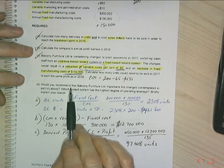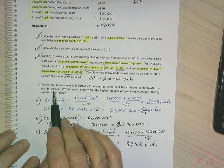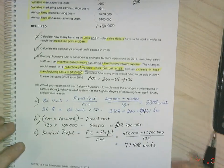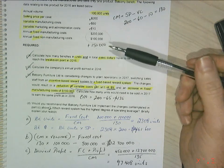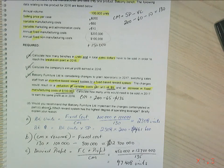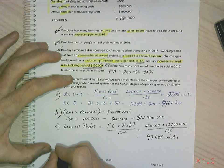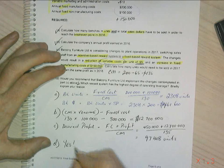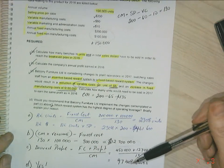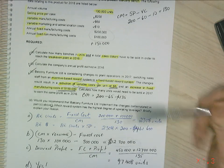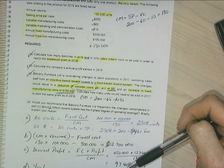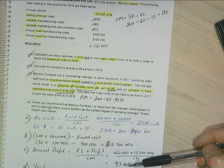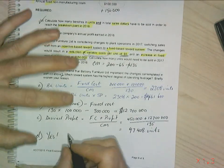Question D: Would you recommend implementing the changes from part C? Yes — you should make this change. Previously we were selling 100,000 units; now we only need to sell 97,408 units to earn the same profit of $12,700,000. We're selling fewer products for the same profit, so this is the better option.